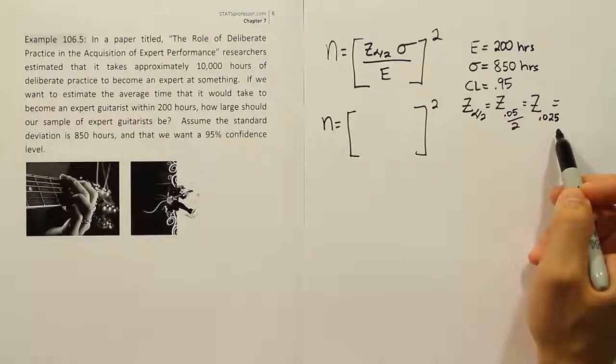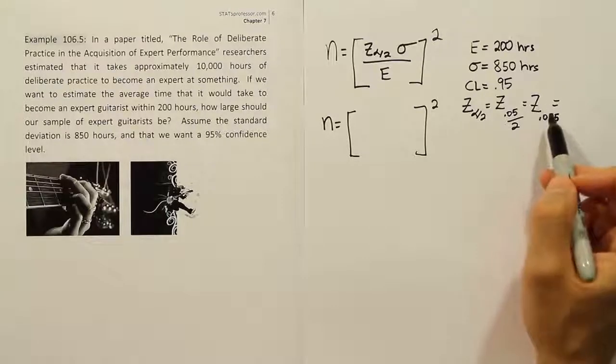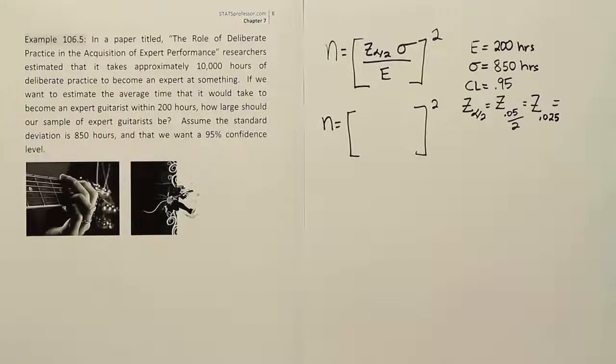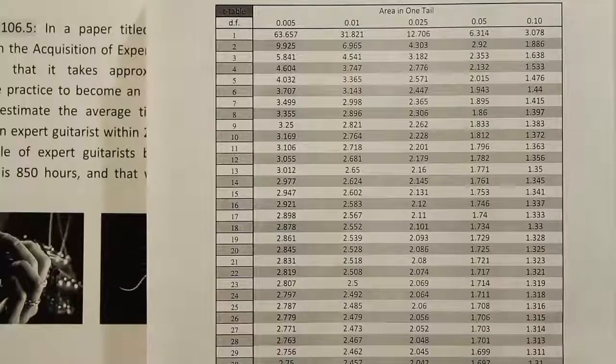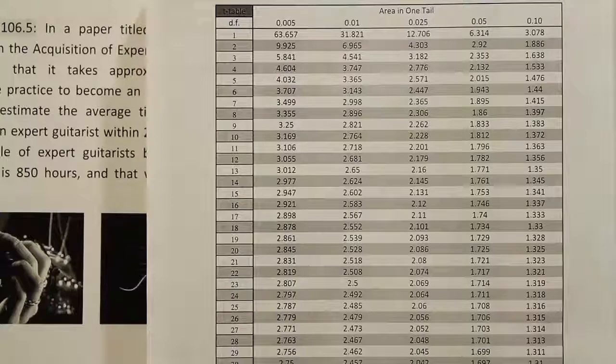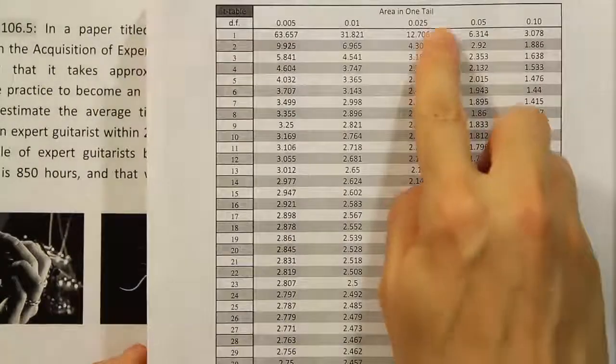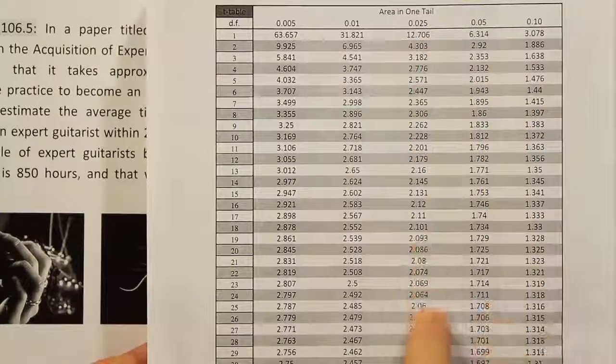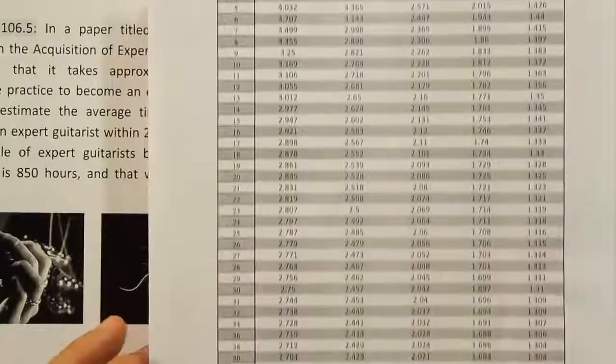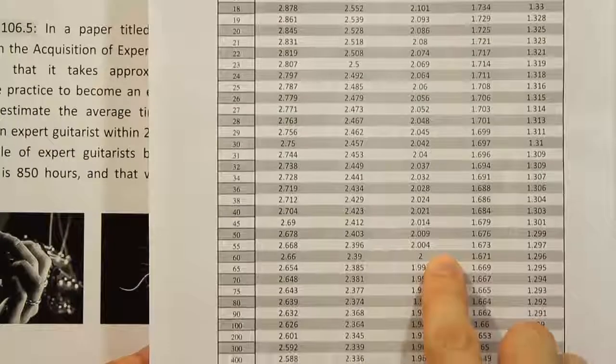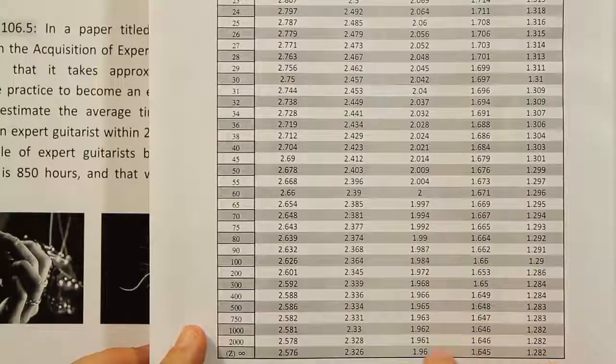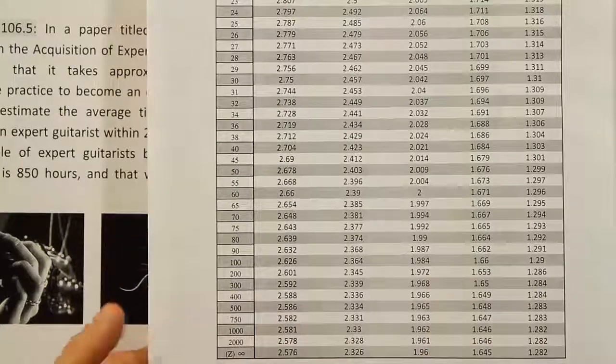Let's look up 0.025 on the T table. Because we're looking for a Z value, we'll go straight to the bottom, and that will give us the critical Z value we need. We're looking up 0.025 in one tail. We'll go straight to the bottom, scroll down a little bit, and we find the answer to be 1.96.